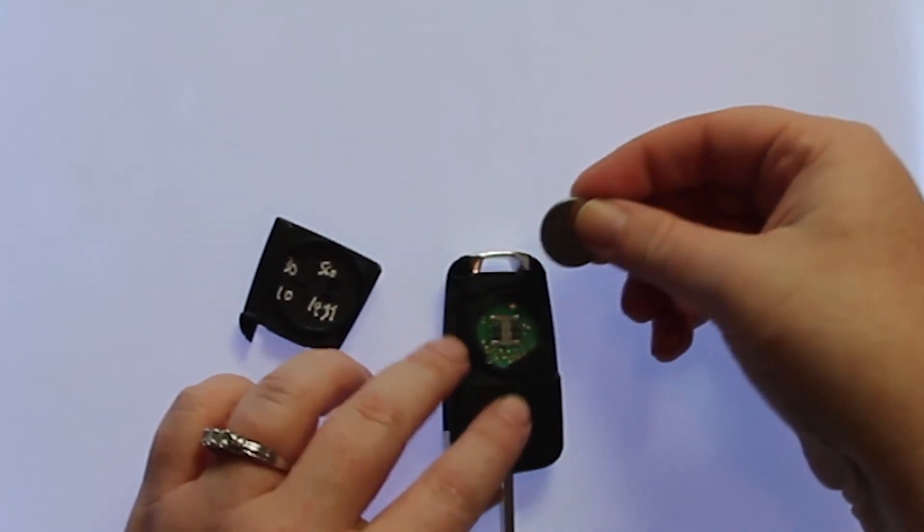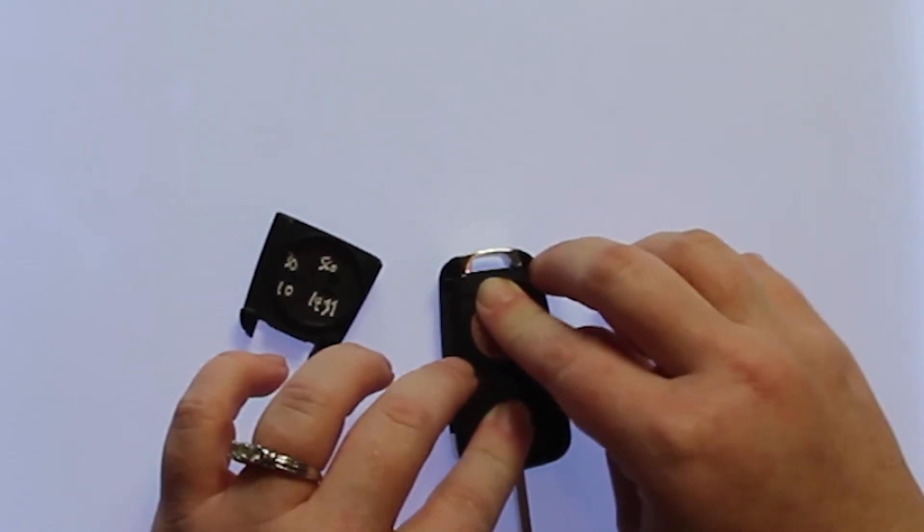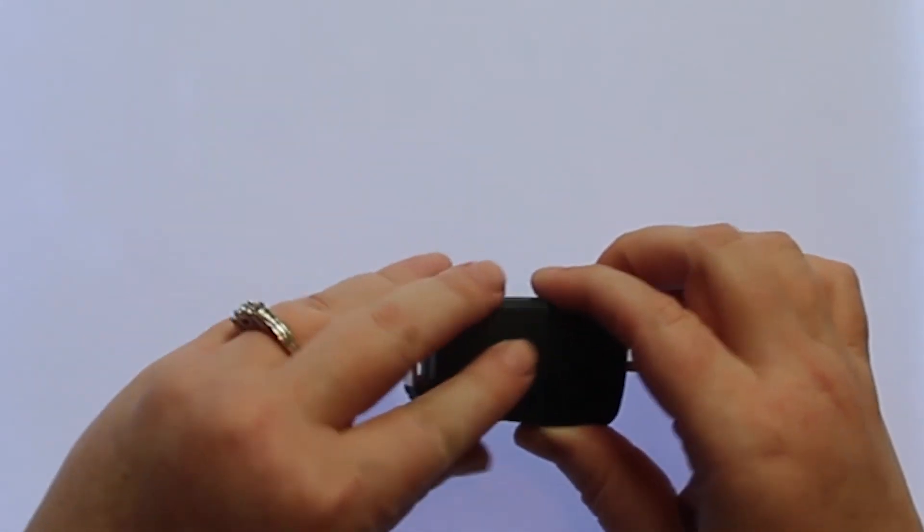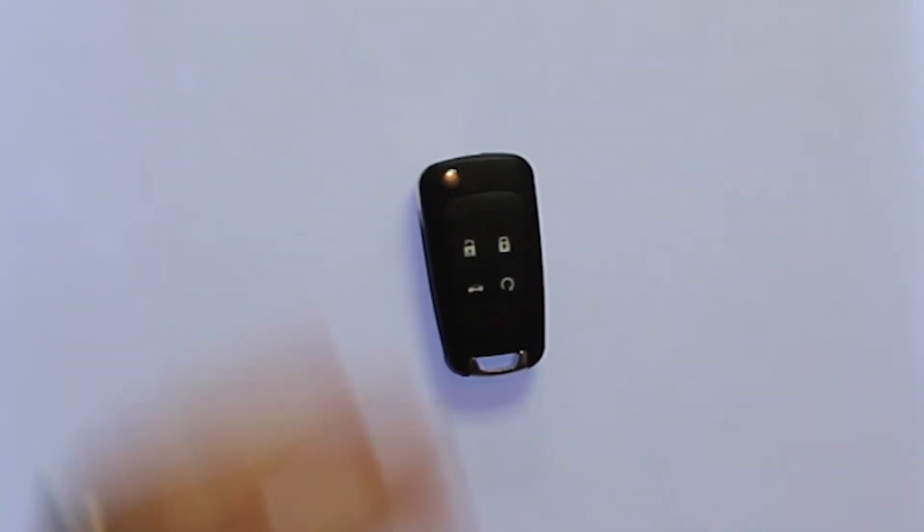Once you have the old battery out, to replace it simply slide the new battery back into place, snap the back of the key fob back on, close the key, and you're done.